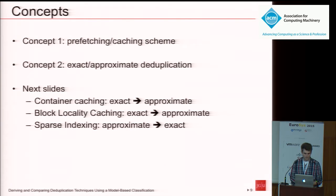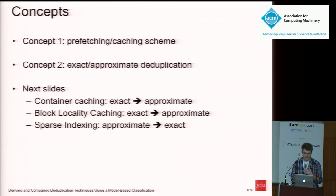We identified two core concepts. The first is the prefetching caching scheme — the technique with which each approach tries to identify redundant chunks in an IO-efficient manner. In our opinion, this is what actually defines a deduplication approach. The second is the deduplication precision: exact versus approximate deduplication, that is, whether a system identifies each redundant chunk. You can combine these two concepts arbitrarily. I will show how to convert each of these systems along the exact and approximate deduplication axis on the next slide.